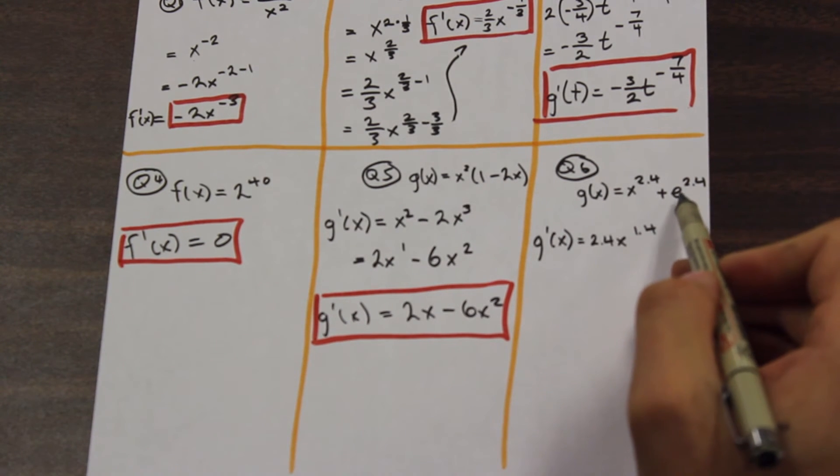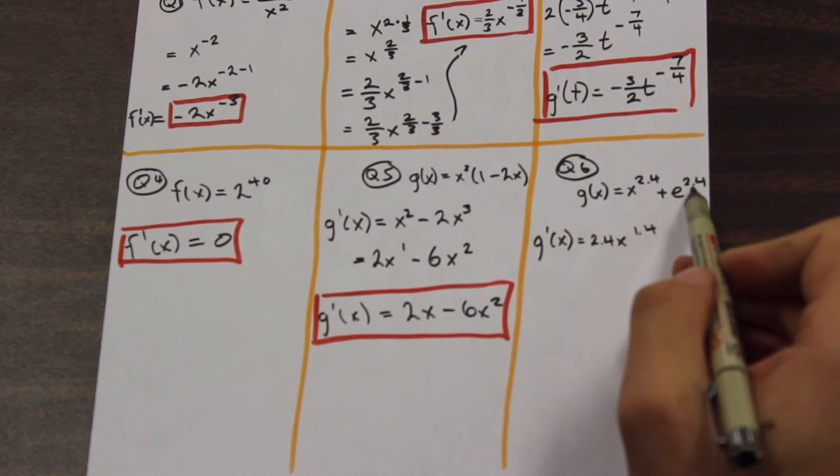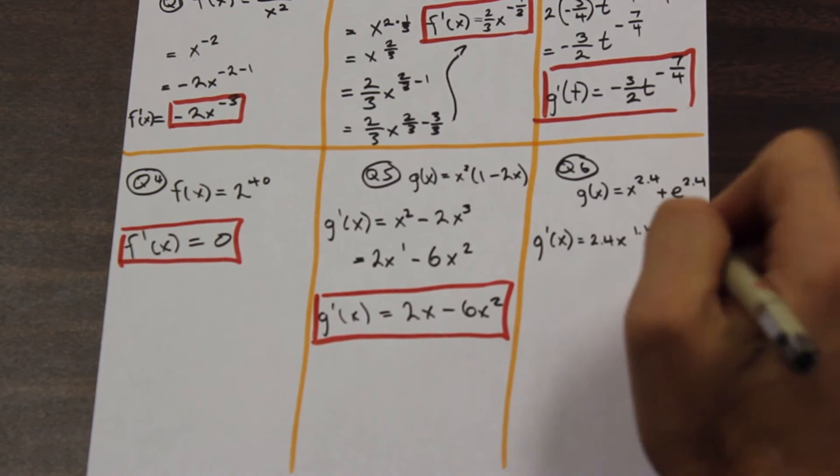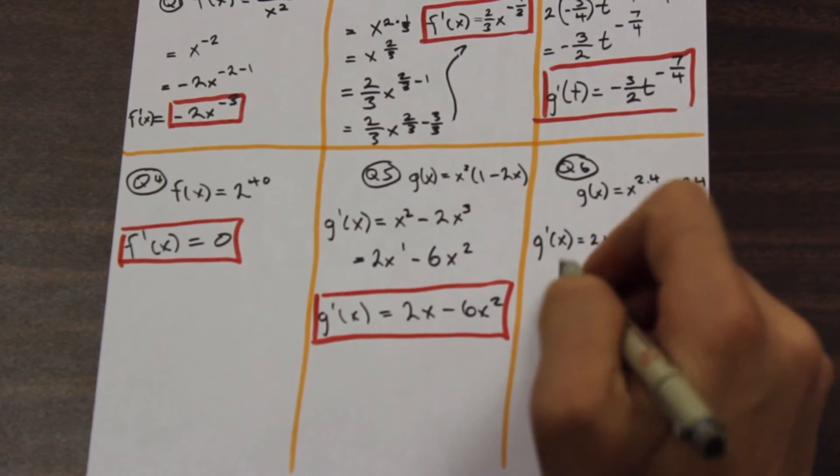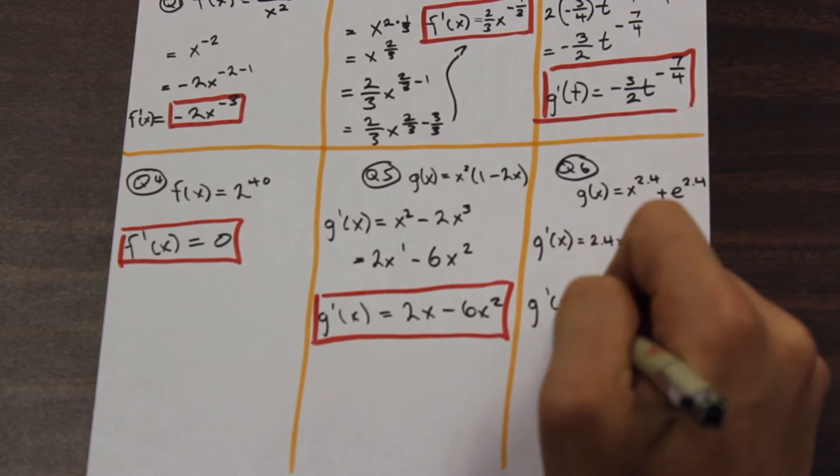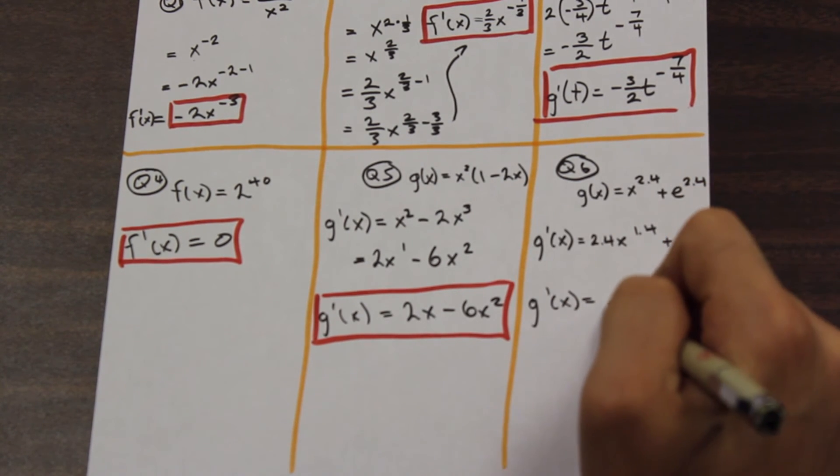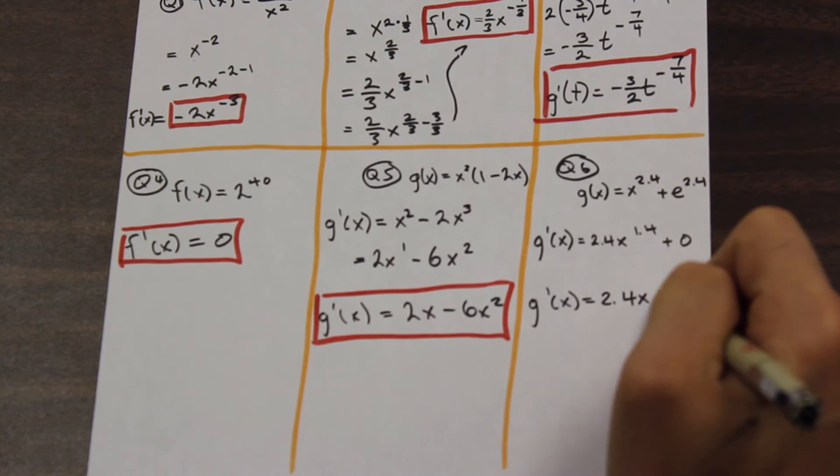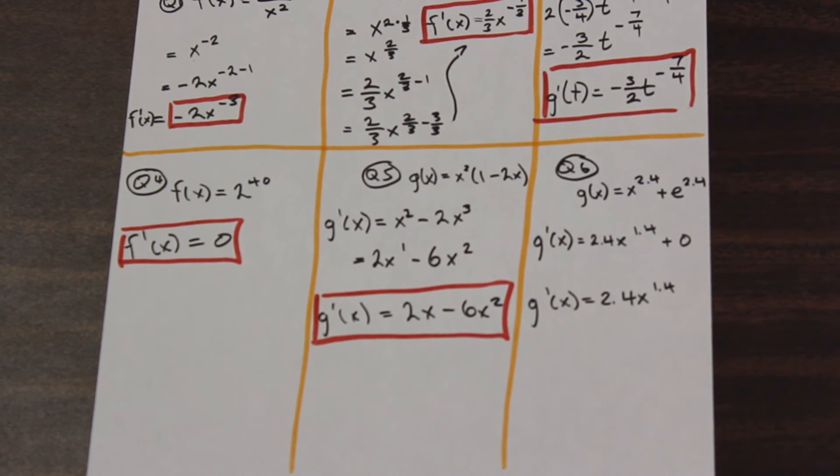And here we have e to the 2.4. So e is a number. It represents a number. It's constant. And 2.4 is constant. So this whole thing is constant. So that's going to just be zero. So we arrive at the derivative of this function is 2.4 times x to the 1.4. And that is it.